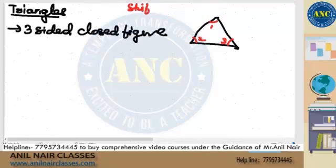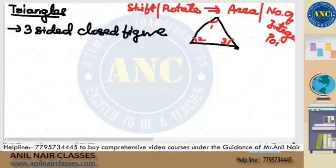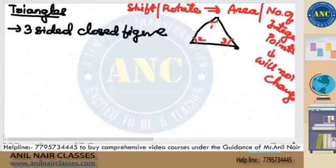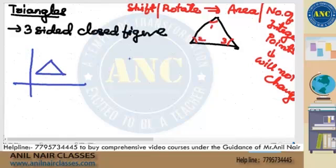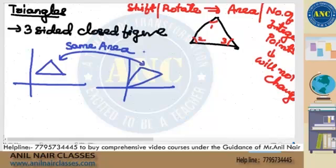Second point: if I shift a figure or if I rotate a figure, the area will not change and the number of integral points will not change. For example, if a triangle is here and you shift it, both triangles will still have the same area. Shifting or rotating a figure does not change its area or number of integral points.